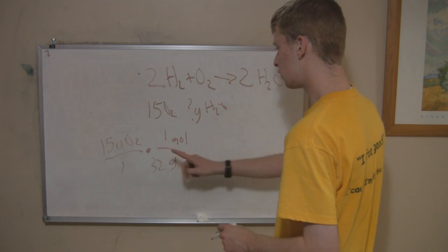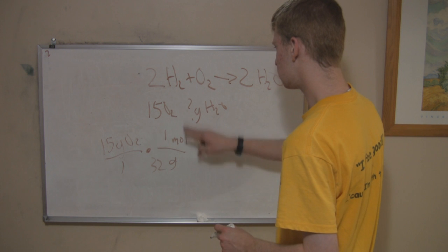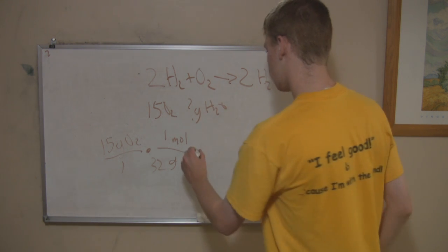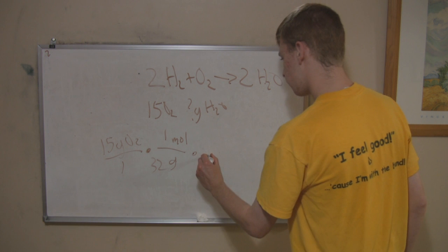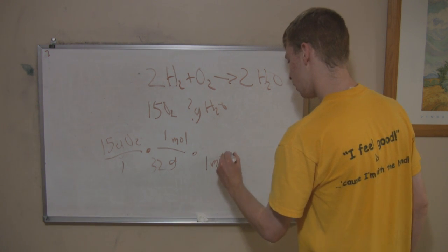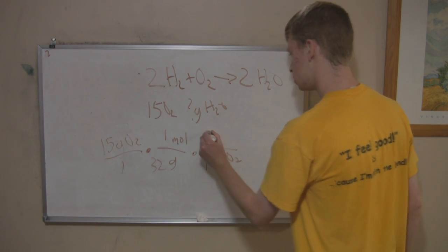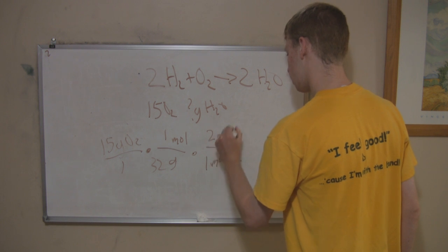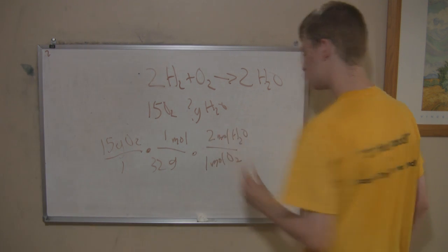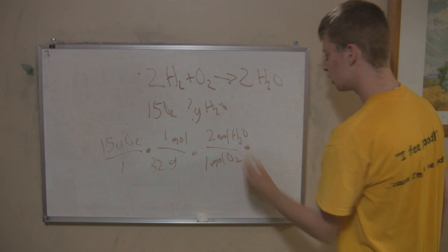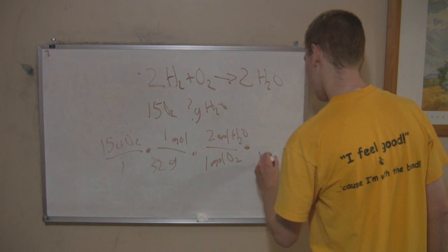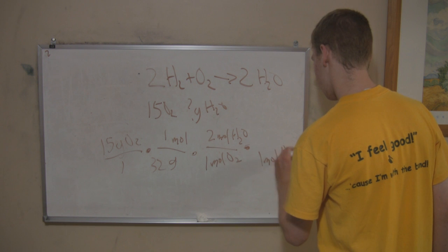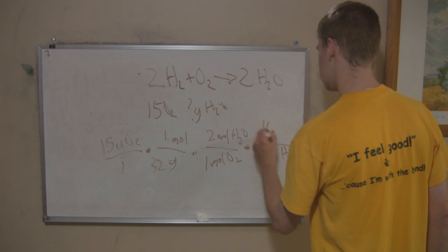Now that you have moles of oxygen, you have to convert into moles of water. Now, if you look at the coefficients, there's nothing there, so it's a one. For every one mole of oxygen, there's two moles of water. So now that you have moles of water, you just have to convert it to grams. And if you add it up on the periodic table, in one mole of water, there's 18 grams.